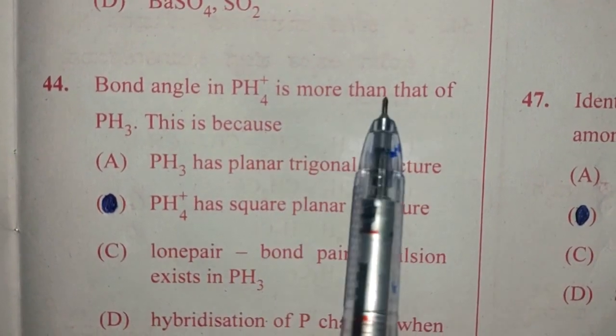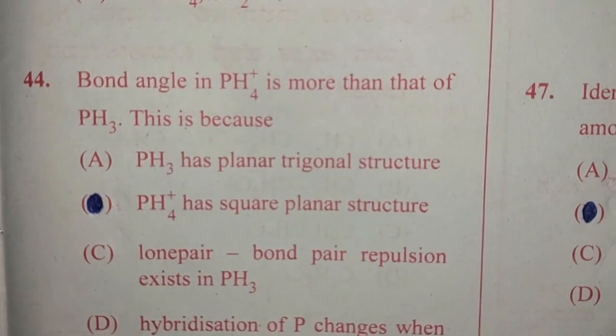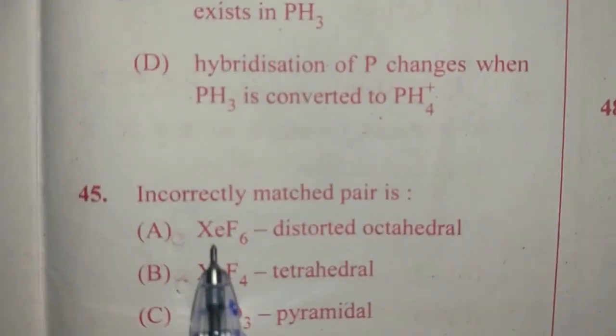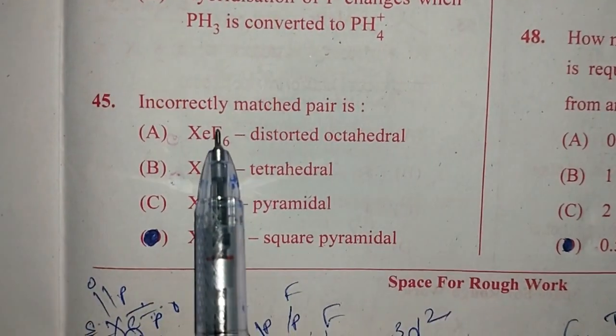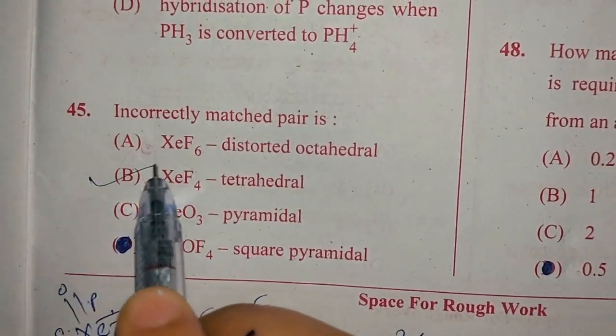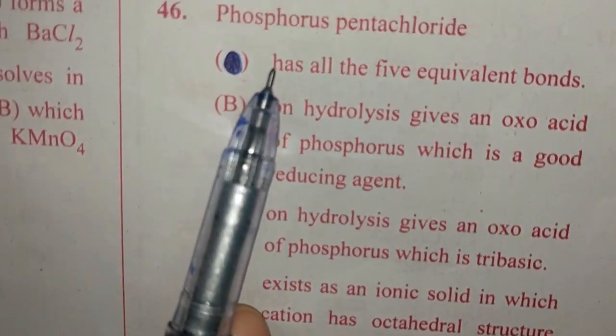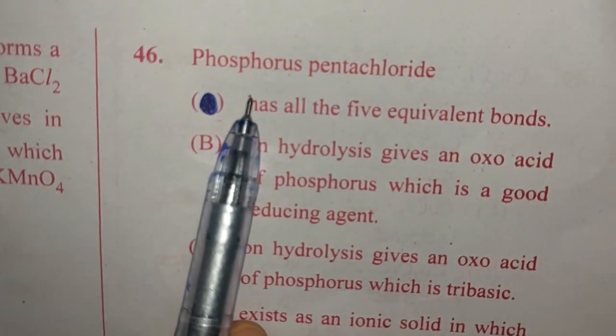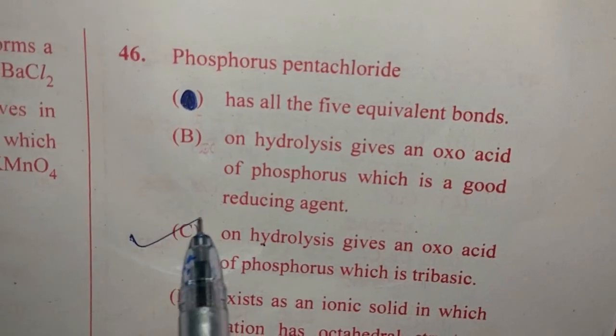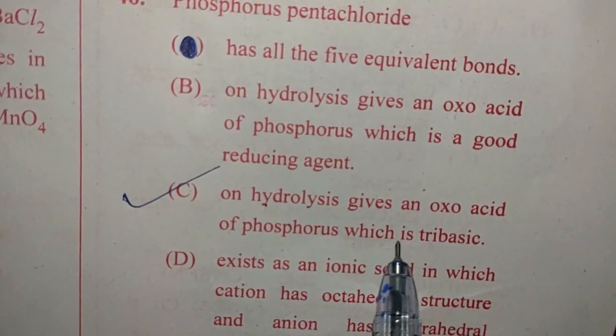Question 44. Bond angle in PH4+ is more than that of PH3. This is because lone pair exists in PH3. So lone pair bond pair repulsion exists in PH3, option C. Question 45. Incorrectly matched pair is the answer for this is XeF4 tetrahedral. Why? Because XeF4 is square planar. Question number 46. Phosphorus pentachloride. Answer for this question is on hydrolysis it gives an oxoacid of phosphorus which is tribasic, option C.